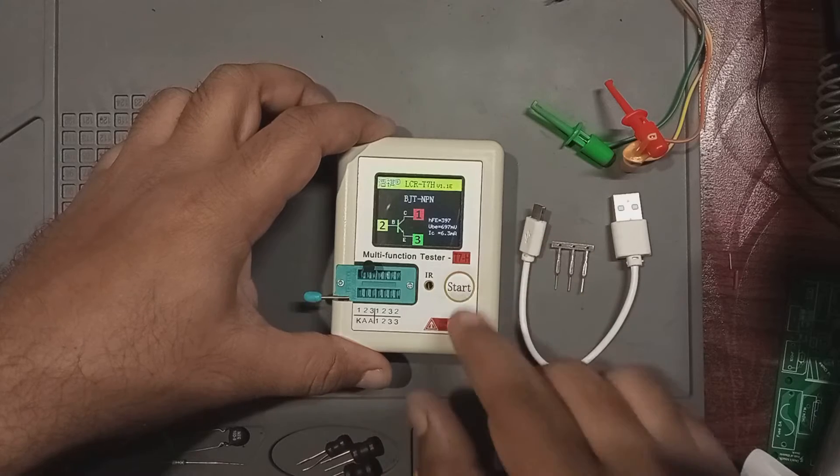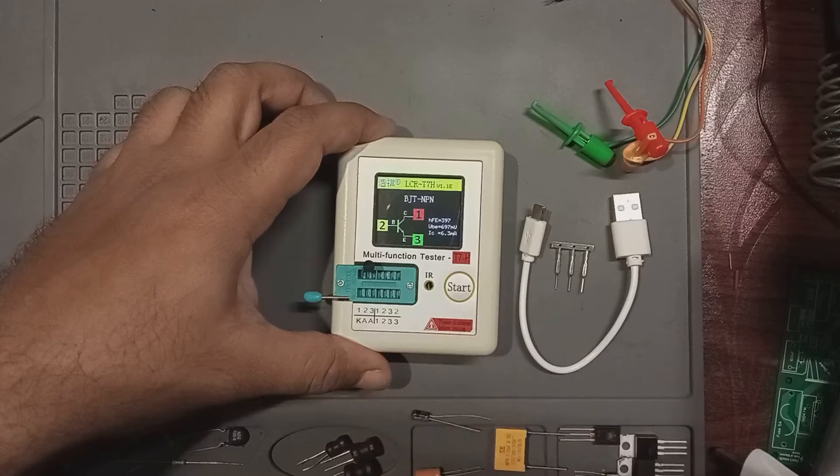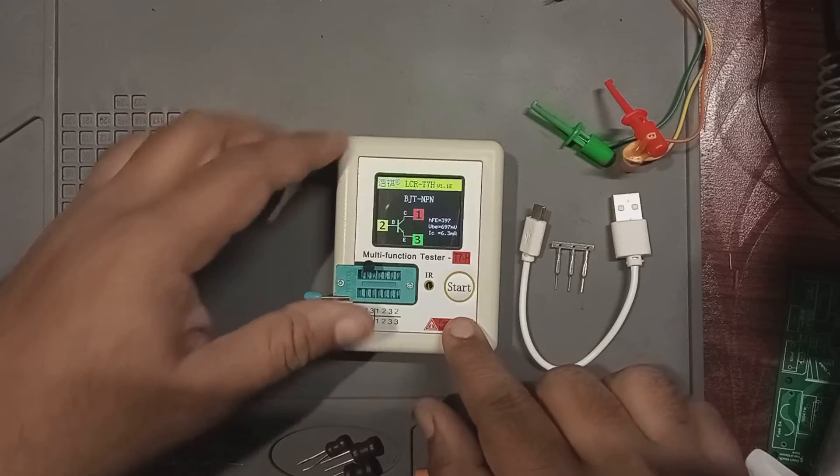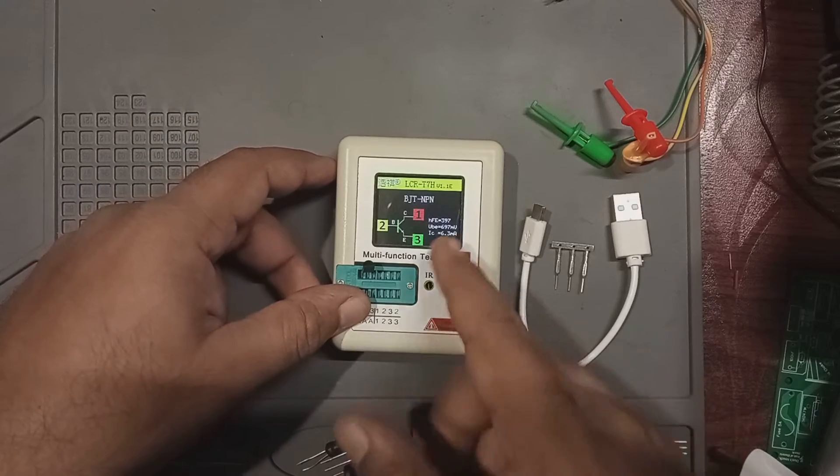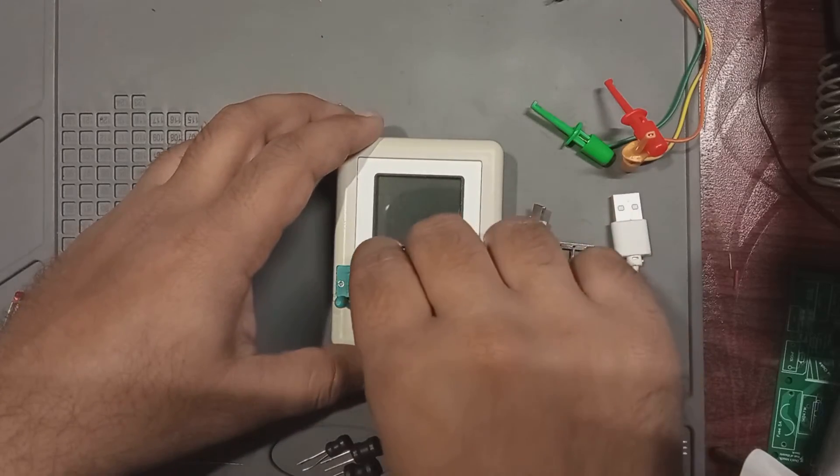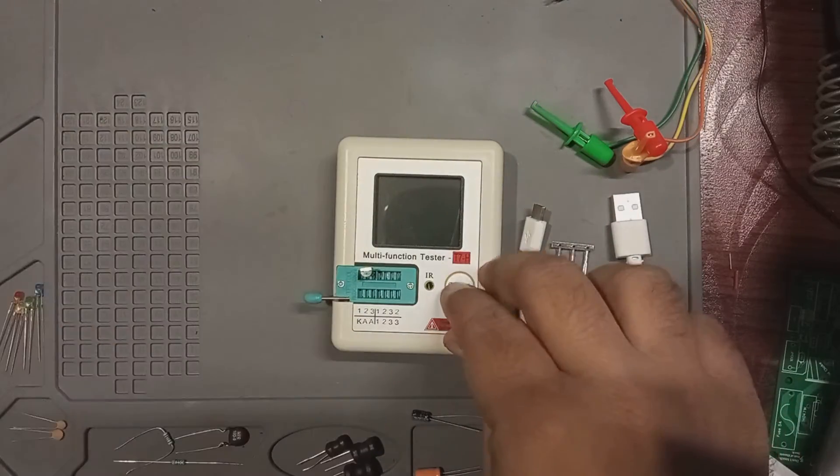We get readings like voltage base emitter shown as VBE, gain indicated by HFE and the collector current denoted as IC. Now, if I flip the transistor and turn the meter back on, you will see the same values.